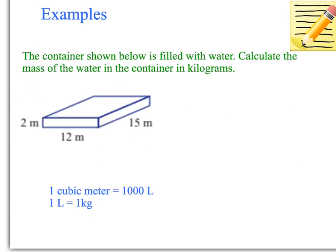Another example for you is a more complex example. Here you have to work out the mass of the water in the container in kilograms. However, we've only got the measurements in meters here, so we do need to do a couple of conversions. This is where our knowledge of capacity and mass comes into it, and volume as well. We need to work out the volume of this. So volume equals length times width times height.